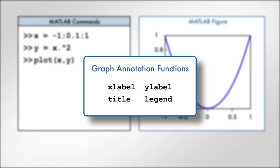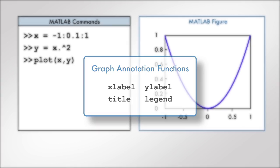We can add a label to the x-axis with the xLabel function. Notice that we pass the label enclosed in single quotation marks as input to the xLabel function.